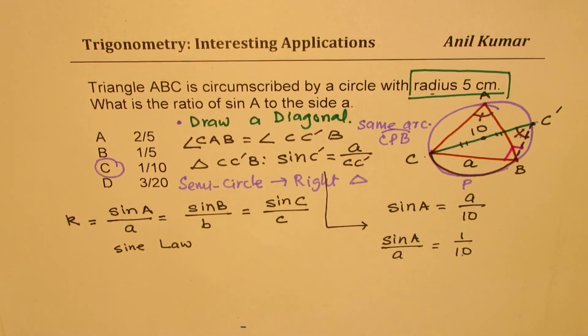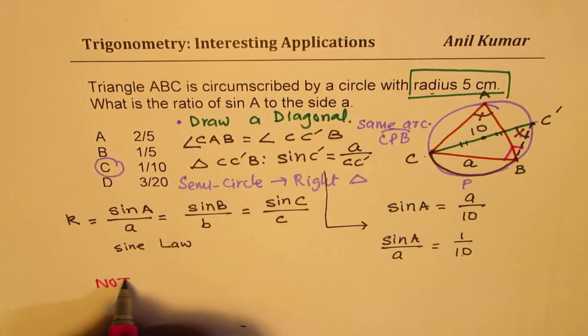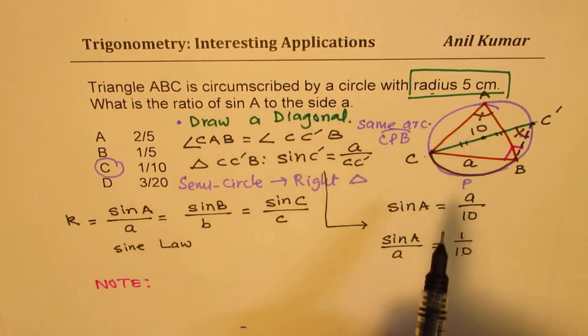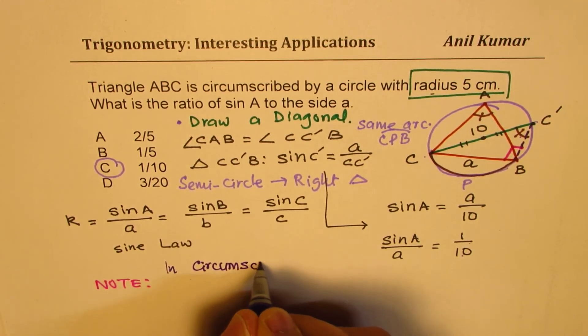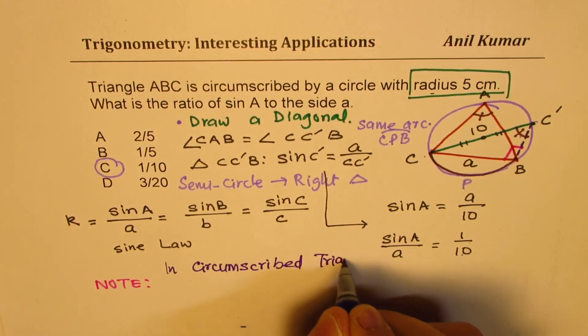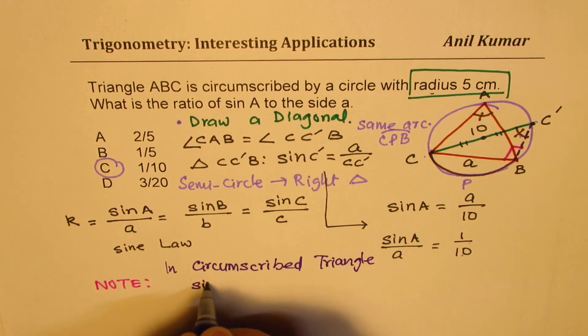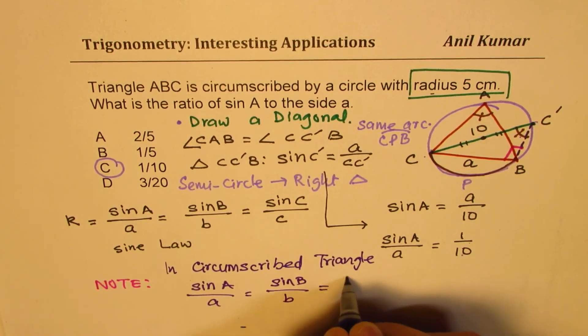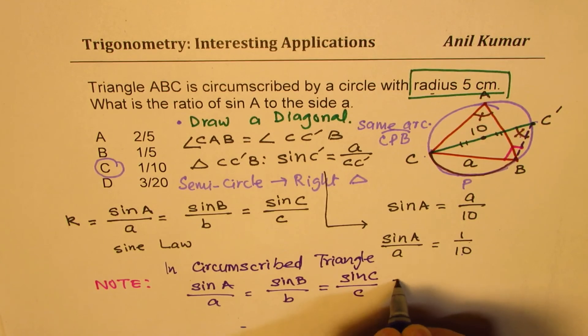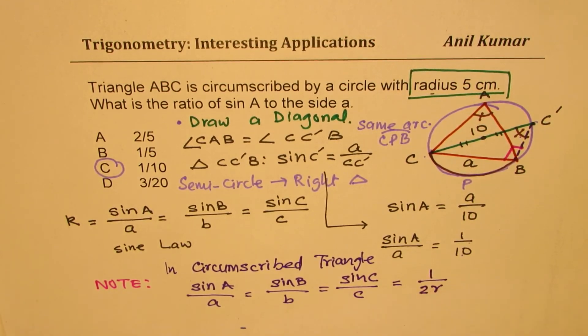Now note, from here, we have drawn a very important conclusion, and that is important thing to note. And that is to say that if you have circumscribed triangle, in circumscribed triangle, sin A over A equals to sin B over B, this is sin law, equals sin C over C equals to 1 over twice radius. So if you know this rule, then you could immediately answer the question within seconds.